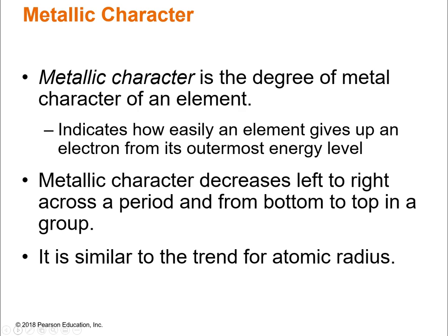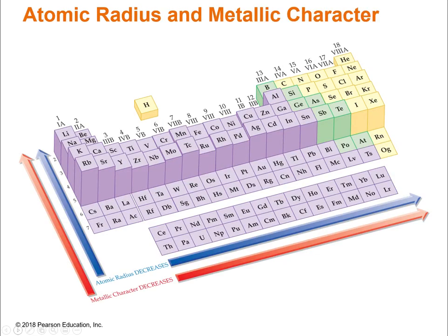The next trend is metallic character — the degree to which an element is metallic, or how easily it gives up electrons. It follows pretty much the same trend as atomic radius: metallic character decreases as you go up a group or across a period from left to right. On your periodic table, atomic radius is shown in blue and metallic character in red. We have a couple more trends to add.